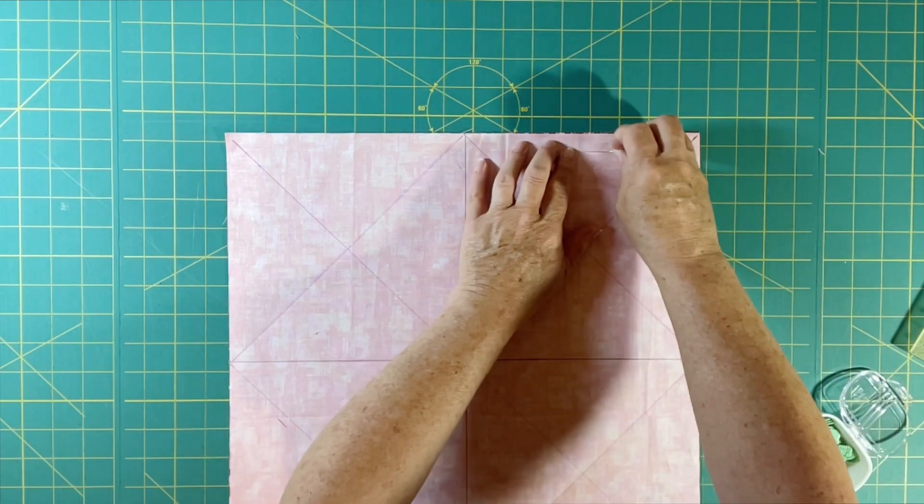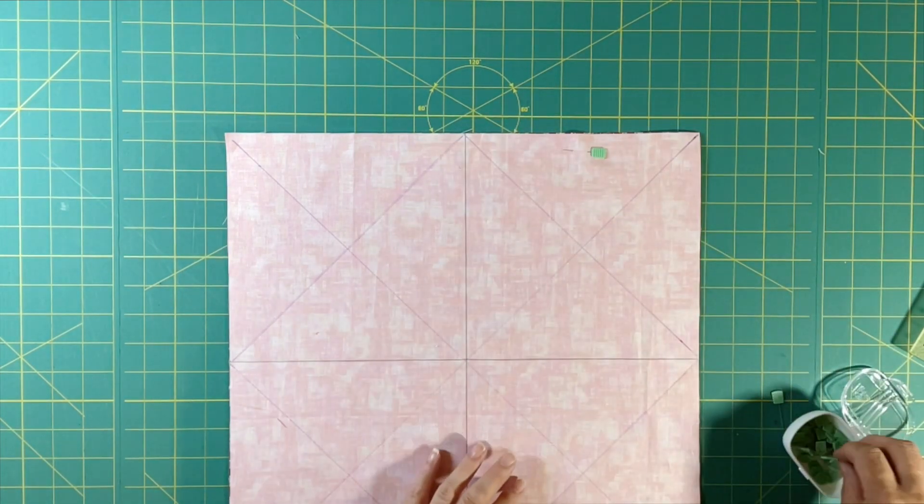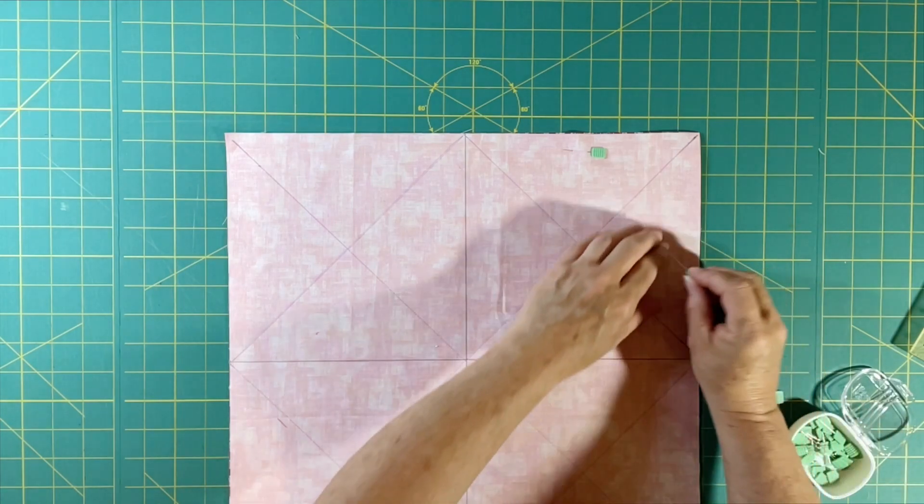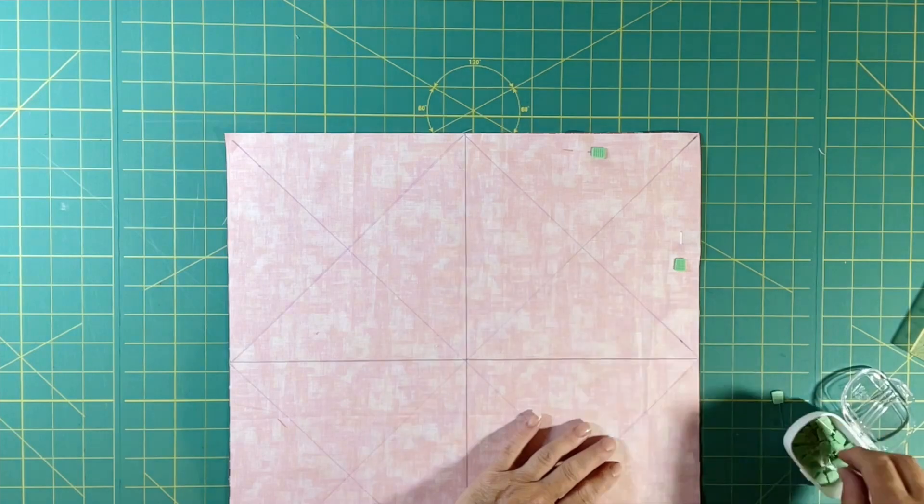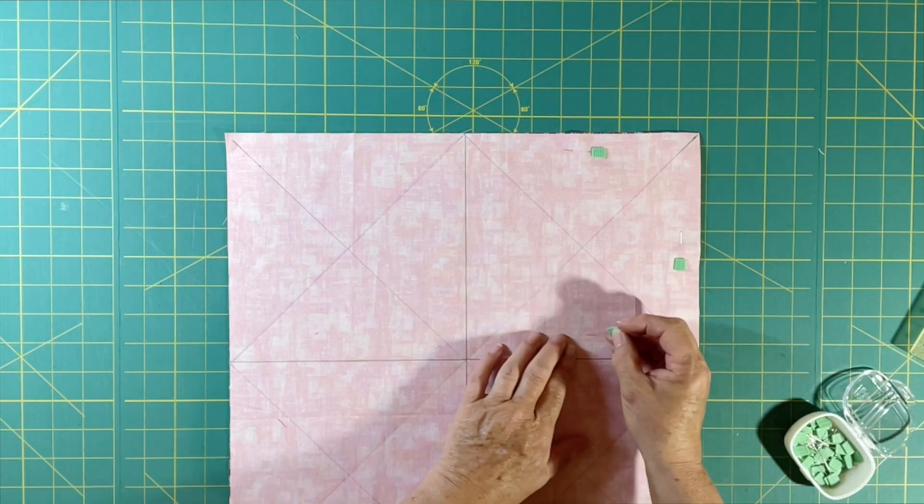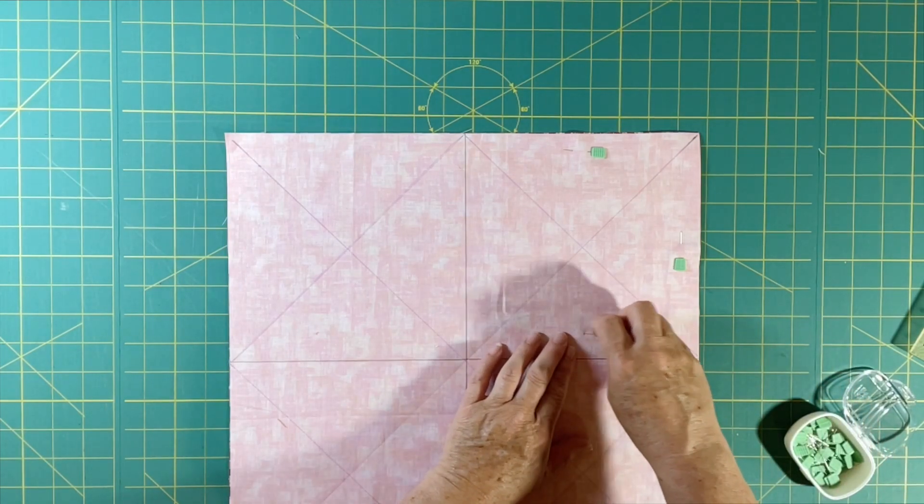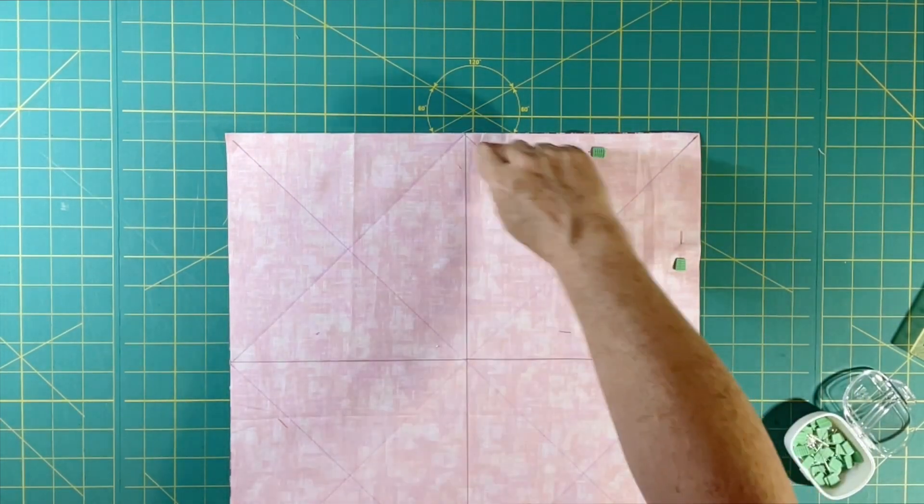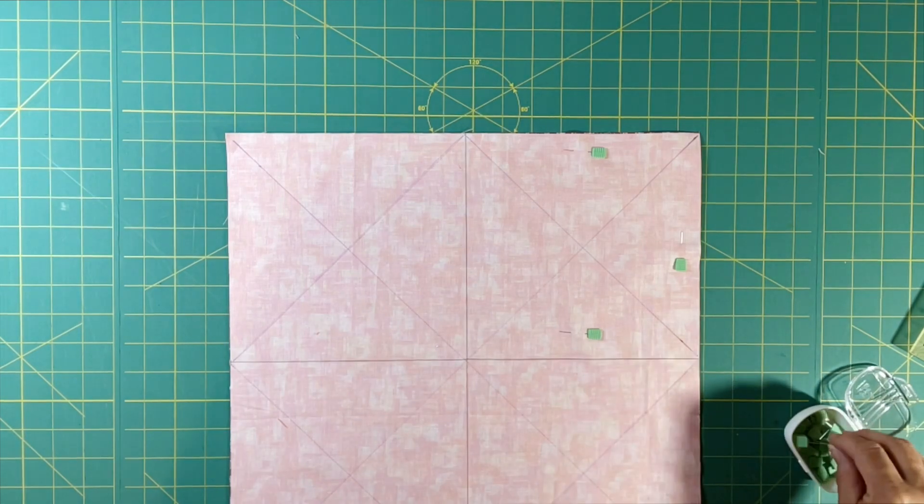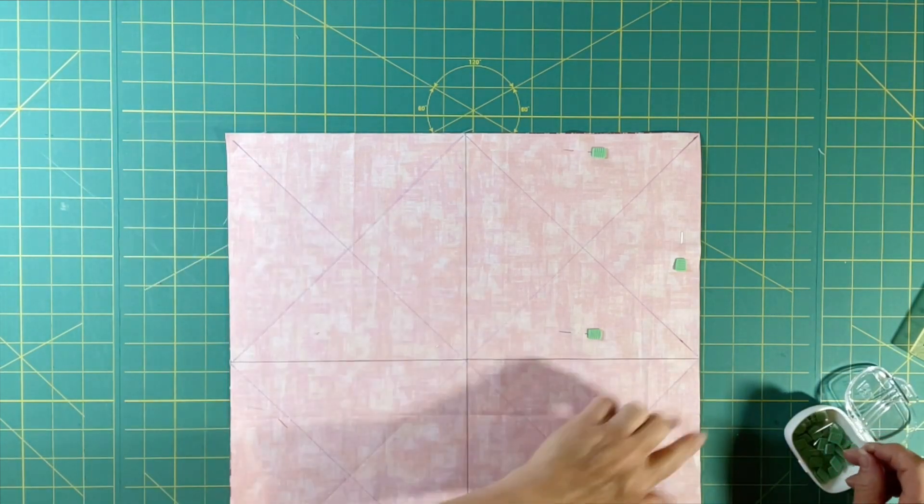You can use as many pins as you want, but I kind of like to go over to the big side of each of these triangles and put one in there. But we are going to be sewing all of these diagonal lines, not this one, not the vertical and horizontal, but all of the diagonal lines that we made.